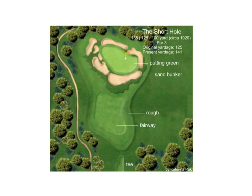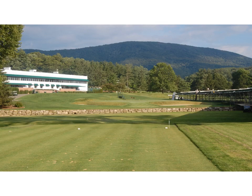The original short hole diagrammed here is believed to be the fifth at Royal West Norfolk. An example of a short hole here in the United States is the 18th at the Greenbrier. From the 18th tee, the short hole has a relatively small green, which is usually wider than deep, flanked and surrounded by bunkers.